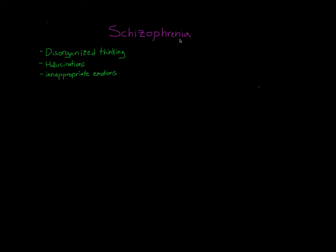Schizophrenia is a mental disorder characterized by disorganized thinking, hallucinations, and inappropriate emotions. It is believed to affect one out of every 100 people. Within this population, 60% of them are men and 40% are women. In total, it is believed there are 24 million people suffering with schizophrenia worldwide.